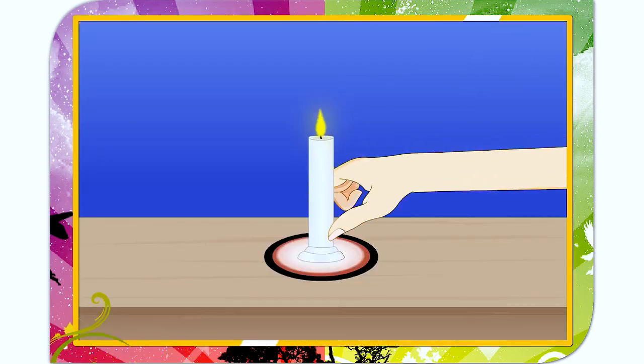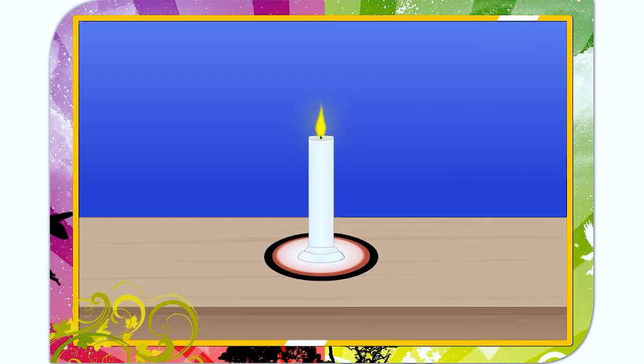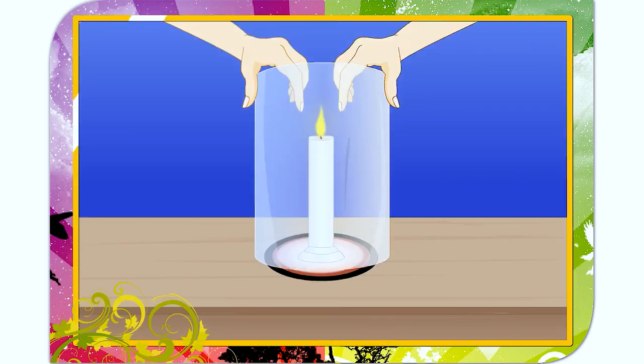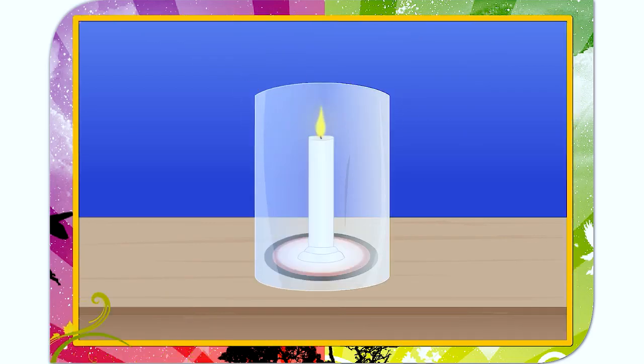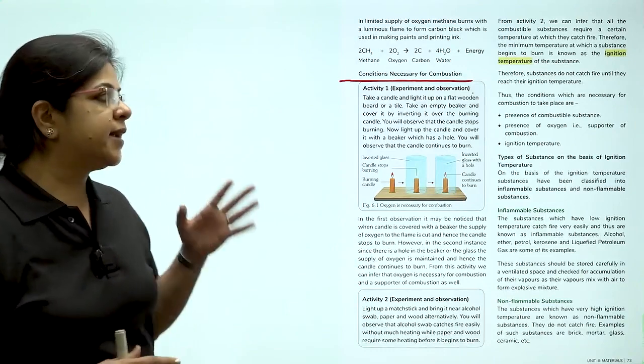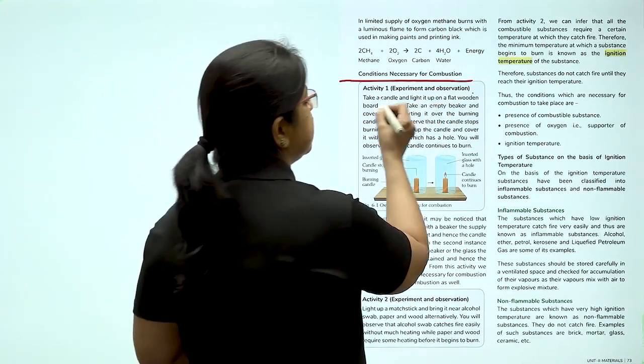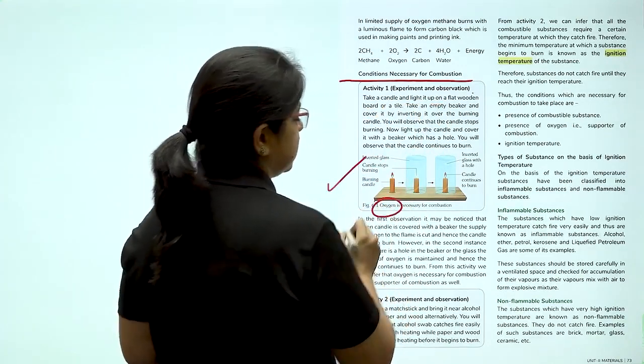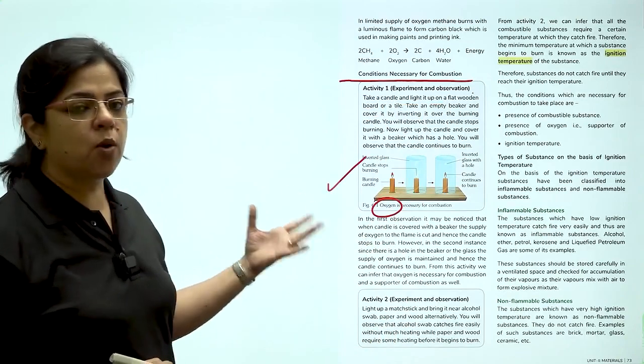Light a candle and fix it on a glass plate. Place an inverted glass jar over the candle. You will observe that it stops burning after a few seconds. This happens because when the air in the inverted glass jar gets consumed by the flame, the candle gets extinguished. This proves that air is necessary for burning. So from this experiment, we understand that air is necessary for combustion. And in air, which component? Oxygen.